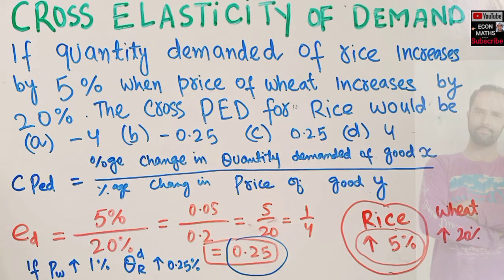Let me repeat: by cross price elasticity of demand we mean percentage change in quantity demanded for a good (in this case rice) to percentage change in the price of another good (here wheat), holding everything else constant - what we call ceteris paribus.